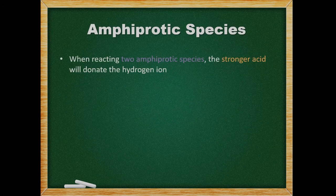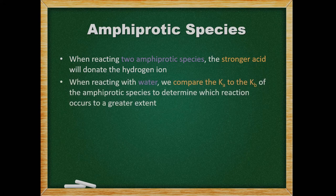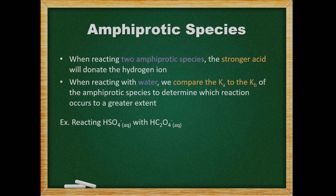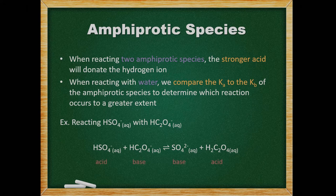When reacting amphiprotic species, the stronger acid will donate the hydrogen ion. When reacting an amphiprotic substance with water, we compare the Ka to the Kb of the amphiprotic substance to determine which reaction occurs to a greater extent. Here we must determine whether the products or reactants will be favored when bisulfite is reacted with binoxylate. Both species are amphiprotic. Bisulfite is a stronger acid than binoxylate, so it will act as an acid and donate a hydrogen ion. We then compare the acid in the forward reaction, bisulfate, to the acid in the reverse reaction, oxalic acid, using our Ka table. Oxalic acid is above bisulfate, so it is stronger and will donate protons more readily. Therefore, the reactants are favored.